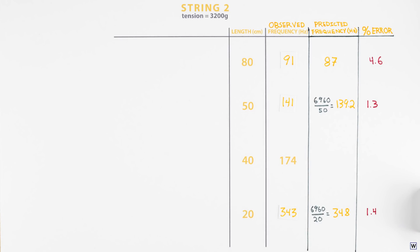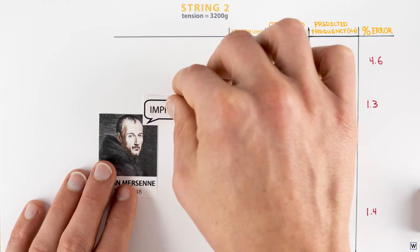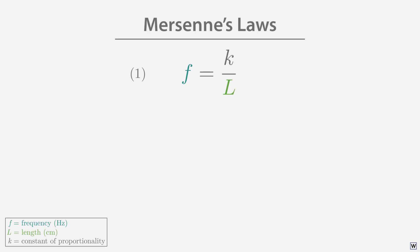And thanks to our high-speed camera, our results are actually more accurate than Mersenne's really long string and pendulum method. We have found our first scientific law. The frequency of a vibrating string is inversely proportional to its length. This relationship is known today as Mersenne's first law.